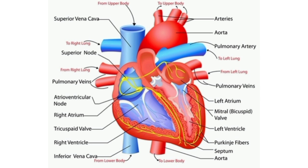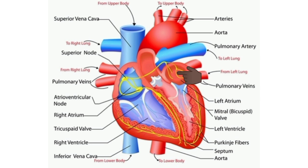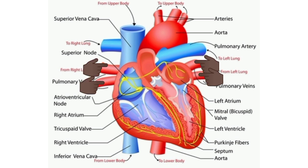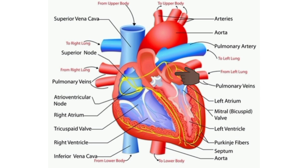The left side of the heart has two chambers: the left atrium and the left ventricle. The left atrium is a thin-walled, low-pressure chamber. It receives oxygenated blood from the lungs through the pulmonary veins. This is usually the only exception in the body where an artery carries venous blood and veins carry arterial blood. Blood from the left atrium enters the left ventricle through the mitral valve.